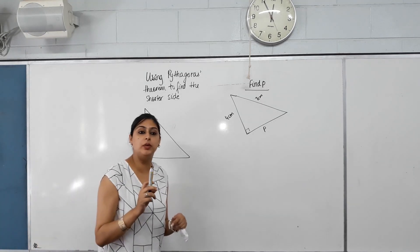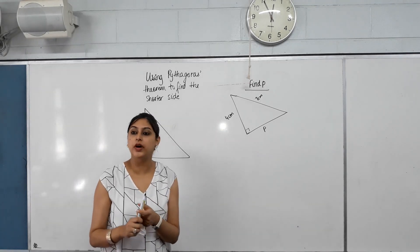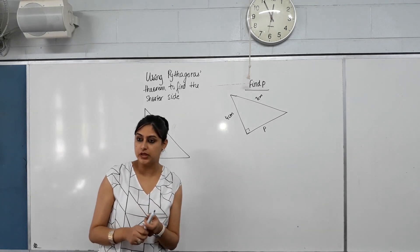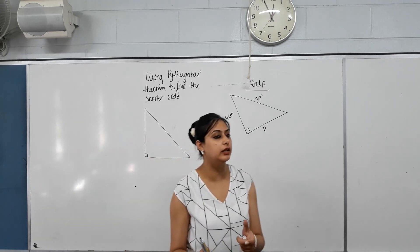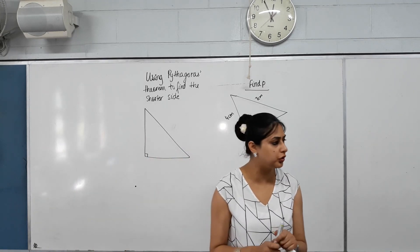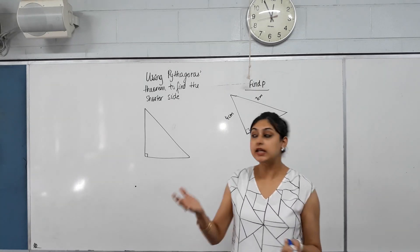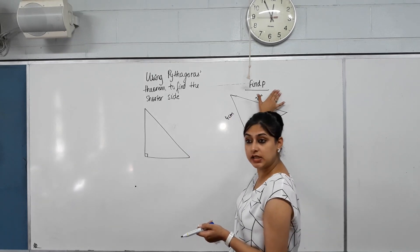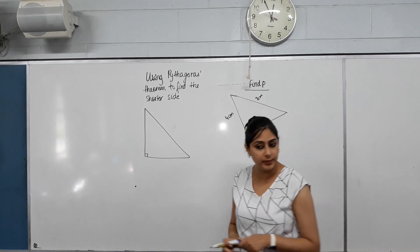So we did an introduction on Pythagoras' theorem and we used Pythagoras to find the length of the hypotenuse in a triangle. Can we find the length of another side that's not the hypotenuse, one of the shorter sides? Can we find the length using Pythagoras? Yes, we can. As long as we've been given two sides in a right-angled triangle, we can find the length of the missing side.